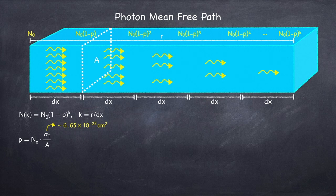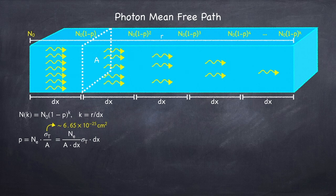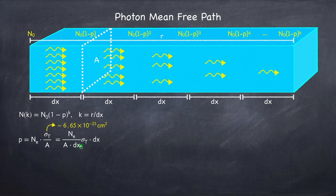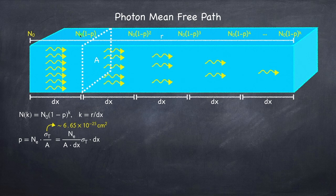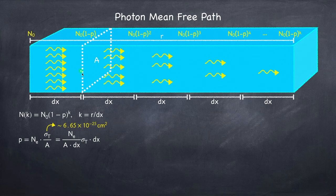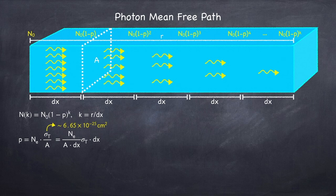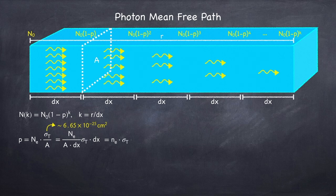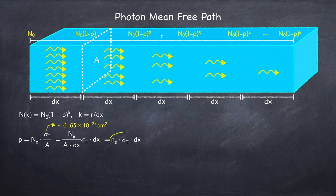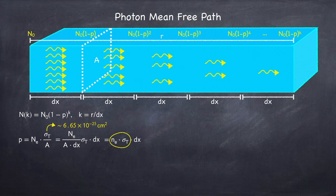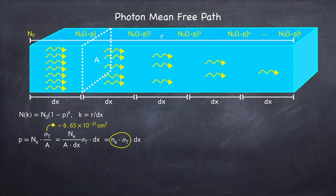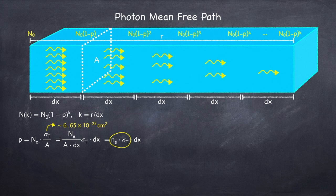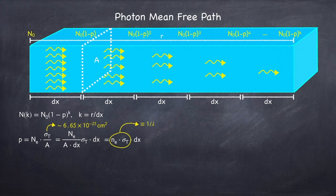Now I'm going to multiply the top and bottom of this by dx. And notice that this quantity here on the bottom in the numerator, a times dx, well that's just this volume of one of the steps. It's got a cross-sectional area a and a length dx. So ne, which is the number of electrons in this volume, divided by the volume is just the number density of electrons. Now let's take a look at this quantity here, the number density times the cross-section. This has units of 1 over length. So I'm going to define the length scale, which I'm going to call lambda, as 1 over this quantity.